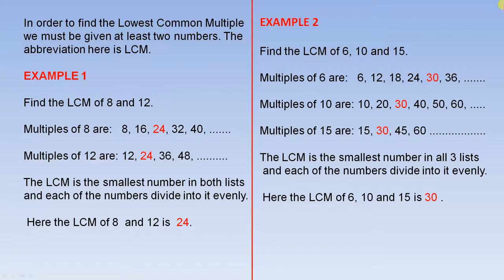Example 1. Find the lowest common multiple of 8 and 12. So here are the multiples of 8, here are the multiples of 12. The lowest common multiple is the smallest number in both lists and each of the numbers divide into it evenly. So here the LCM of 8 and 12 is 24 because that's the smallest number that occurs in both lists.